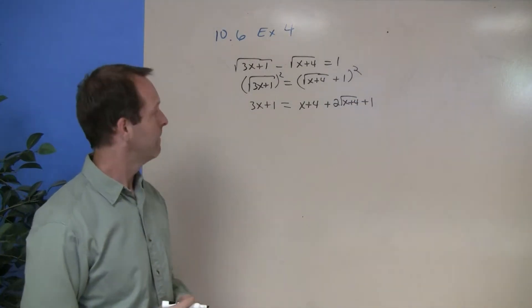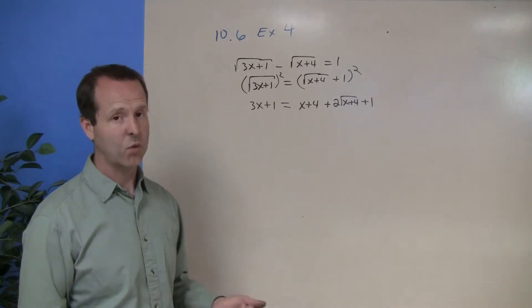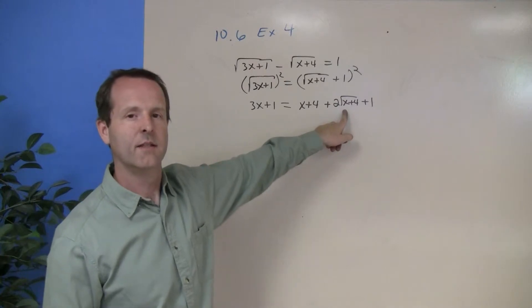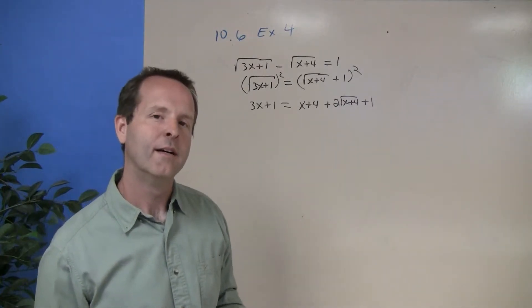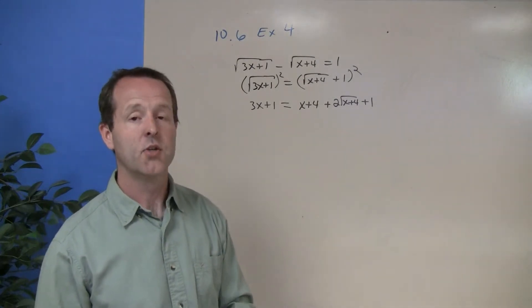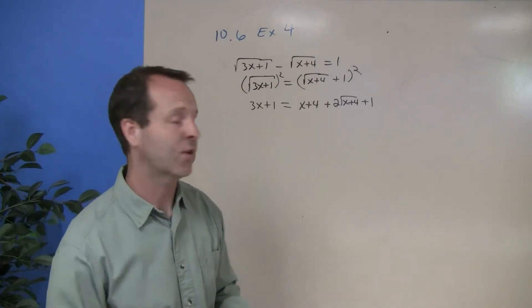You all right with that? Now what you see is, I squared both sides, but I still have a radical here. You said they would go away. Well, they do go away. But in this problem, we start with two radicals. So I have to do this process again. So let's clean it up a little bit and isolate the radical.